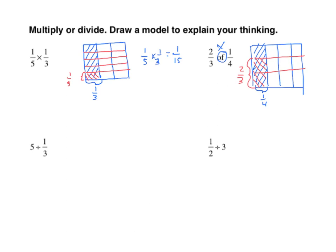If we look at this, we have four times three equals twelve, so our denominator is twelve. Two out of the twelve are double-shaded, and of course we can simplify that to one-sixth. Now let's use the algorithm: two-thirds times one-fourth equals two times one over three times four. We can find a common factor — that becomes a one, this becomes a two — and I end up with one-sixth, just like the answer we had when we used the area model.